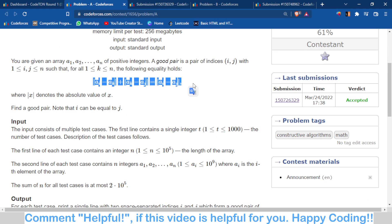Such that if we do |ai - ak| + |ak - aj|, it should be equal to the difference between the numbers. So basically for all ak where k goes from 1 to n, this condition holds. There is a very simple observation which we have to make.